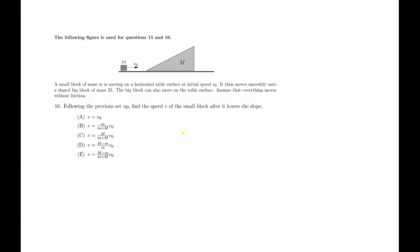Number 16, following the previous setup, find the speed V, our final velocity of our small block after it leaves the slope. The key here is after it leaves the slope. What it means is that we have our small block that approaches our big block here, and then they collide, and then at one point they went up as high as here or somewhere along in our inclined plane.